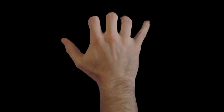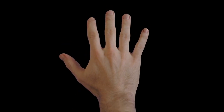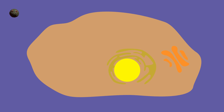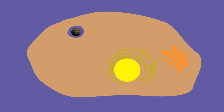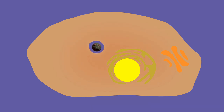Viral replication begins in the skin. When the virus attaches to a skin cell, it is taken inside via an endosome and brought deep into the cell. As the endosome gets deeper into the cell, the environment becomes more acidic and the endosome's membrane gains a negative charge.